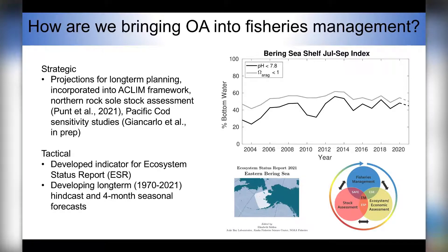So to recap, how are we bringing OA into fisheries management? For strategic planning, we provided long-term projections to the ACLIM framework, Northern Rock Sole stock assessment, and Pacific Cod sensitivity studies. For tactical planning, we contributed to the 2020 and 2021 ecosystem status report, including the first iterations of our indicator. We're also developing a much longer model hindcast in order to expand the historical perspective of our index. We're further testing our ability to produce four-month seasonal forecasts that could provide advance notice for the development of more corrosive water conditions. We're really excited about this work and are continually looking for ways to improve our products.